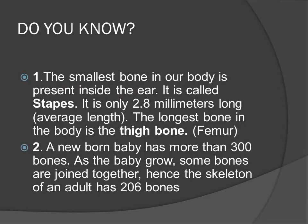The smallest bone in our body is present inside the ear. It is called stapes and is only 2.8 mm long. The longest bone in the body is the thigh bone, femur. A newborn baby has more than 300 bones. As the baby grows, some bones are joined together. Hence, the skeleton of an adult has 206 bones.